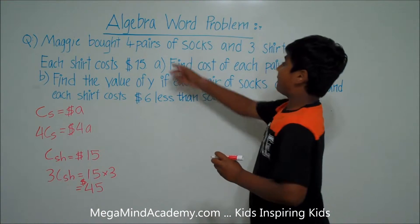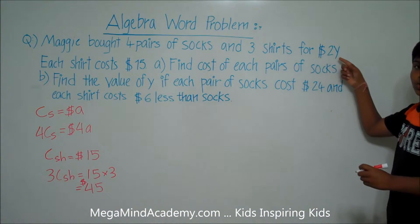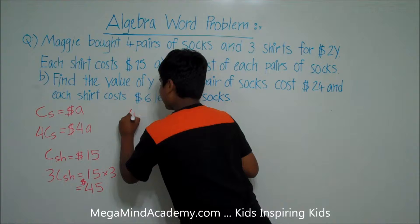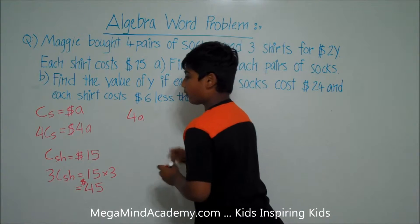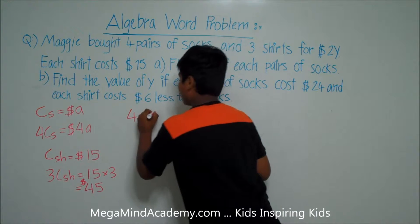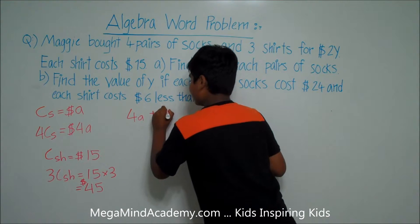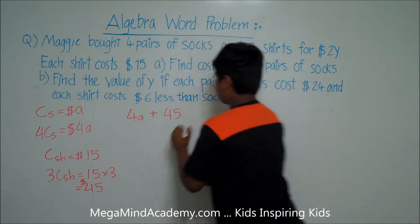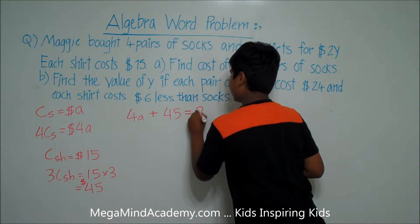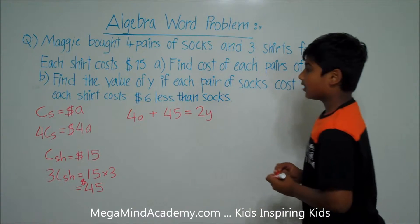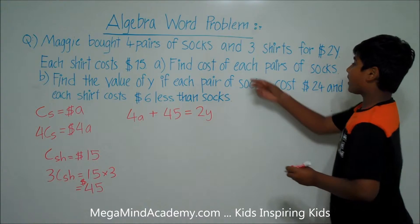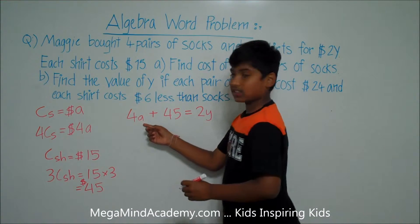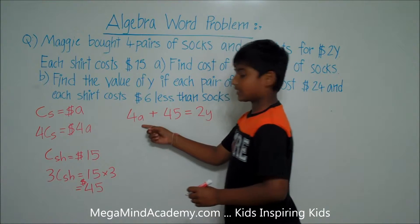Now we know she bought four pairs of socks and three shirts for 2Y dollars. So let's write that down: 4A dollars — the cost of four pairs of socks — plus forty-five dollars — the cost of three shirts — is equal to 2Y dollars. And one pair of socks equals A, so four pairs equals 4A.